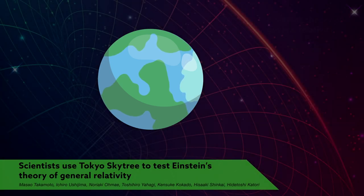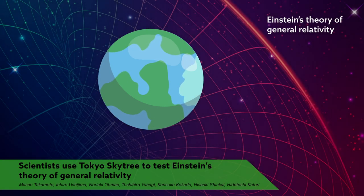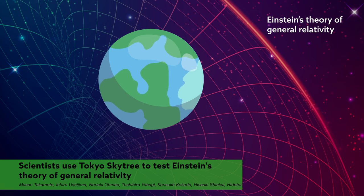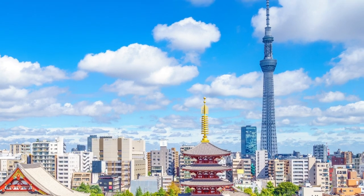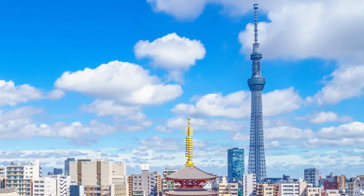Scientists have done it again. They've verified Einstein's theory of general relativity using real-life experiments. The latest group to do it is led by researchers at the Riken Center for Advanced Photonics and Cluster for Pioneering Research.